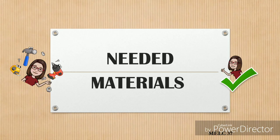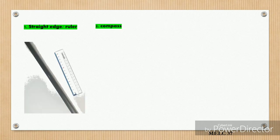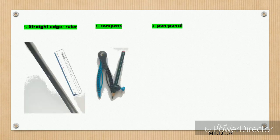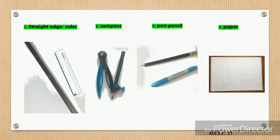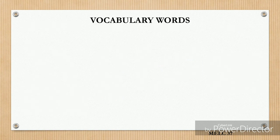These are the needed materials. First, we need a straight edge or ruler. Two, compass. Three, pen or pencil. And four, a piece of paper for us to draw these things. Let's familiarize ourselves first with these vocabulary words.